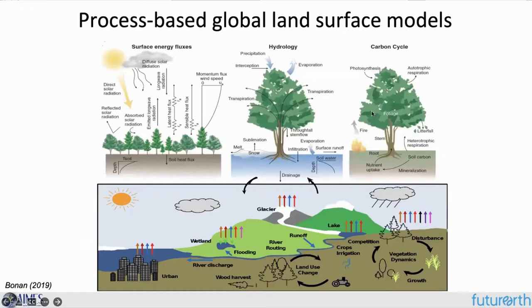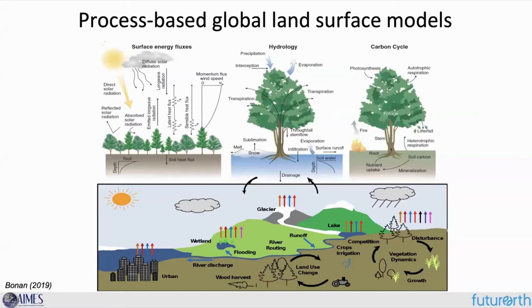They're used primarily, but not only, for historical and future climate change projections, and they are developed from a range of different fields such as the hydrology community, catchment hydrology community, the forest gap community, and the ecological modeling community. This schematic shows the kinds of different processes involved: the carbon cycle, hydrology cycling through plants and soils, surface energy balance, as well as larger scale processes such as river routing and runoff, flooding, irrigation of crops, other land management activities, and longer term vegetation dynamics related to land cover change and species interactions.